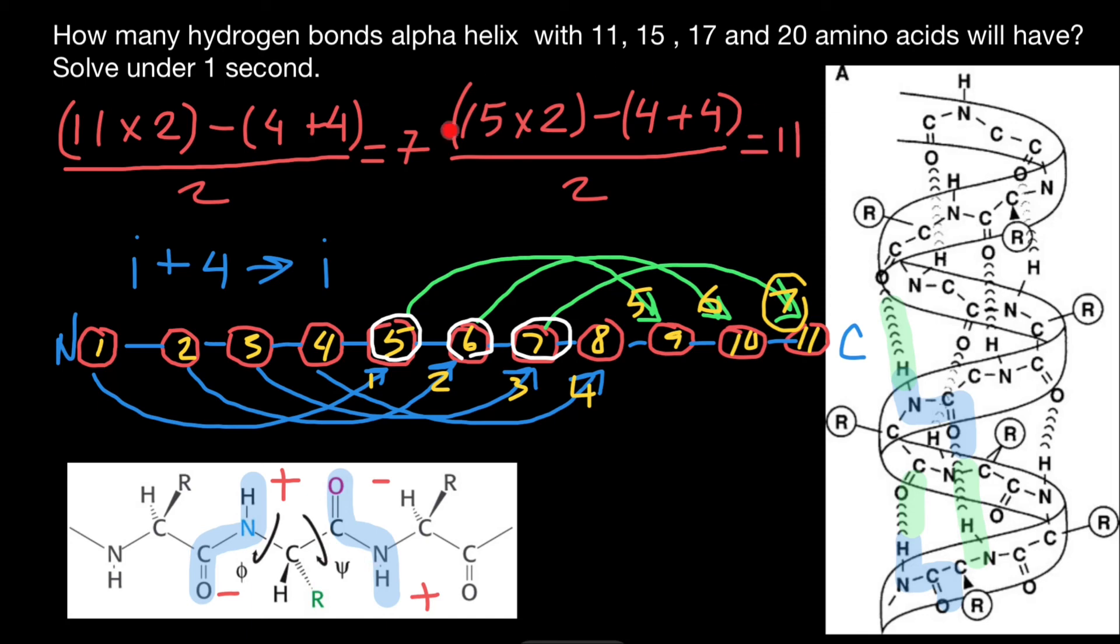But it still takes more than one second, right? And now I want you to see the pattern. When our polypeptide chain was 11 amino acids, we got seven hydrogen bonds. When our polypeptide chain consists of 15 amino acids, we got 11 hydrogen bonds.